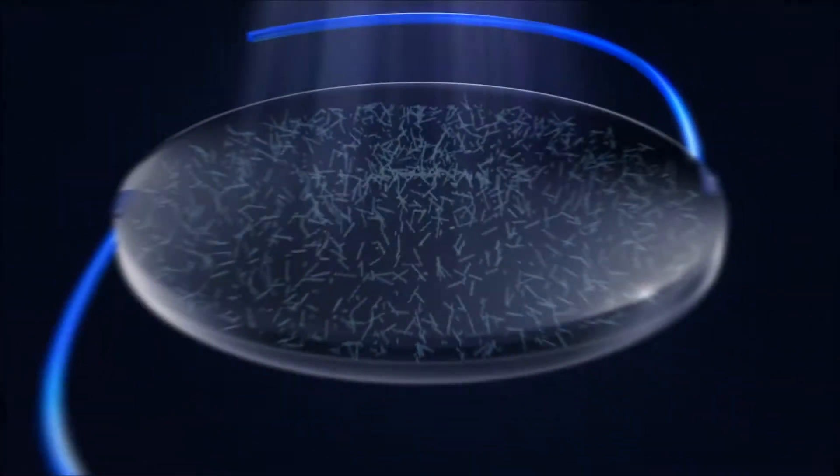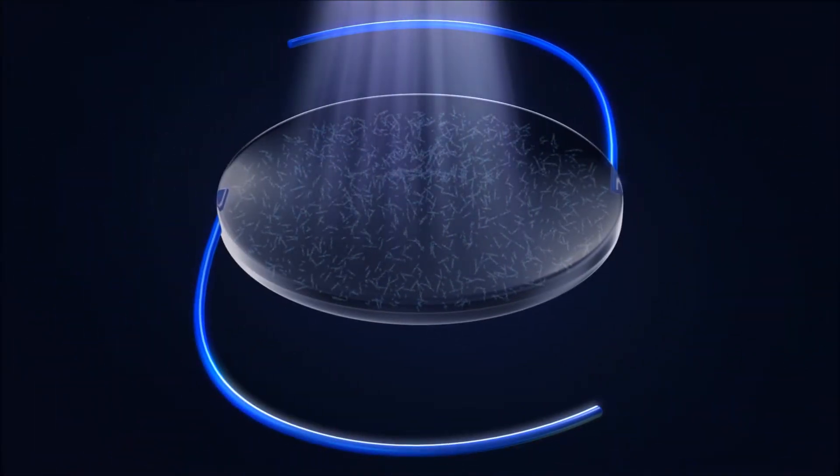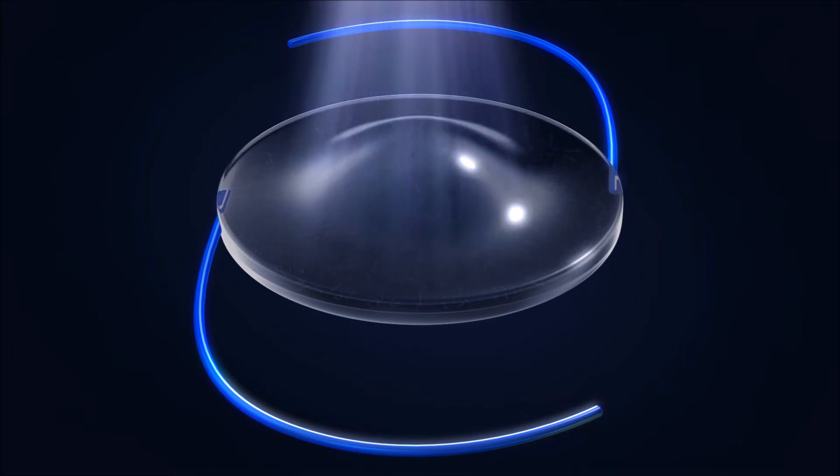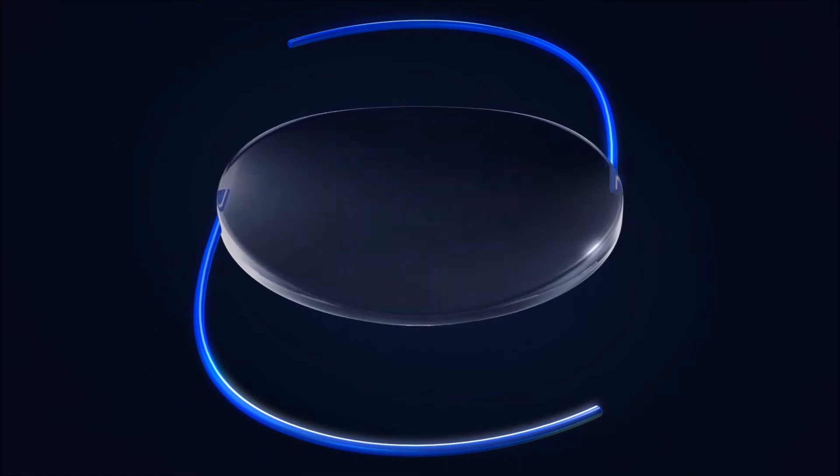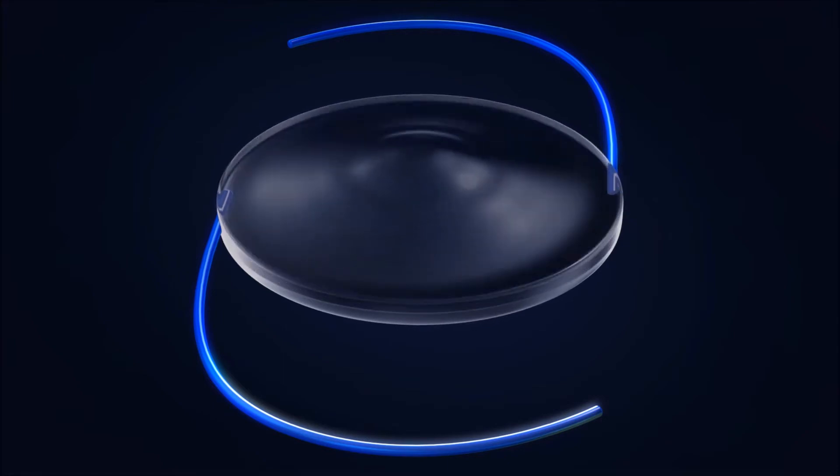The remaining unreacted macromers physically diffuse into the exposed area, causing a highly predictable change in the shape of the lens and a refractive power change of the RxLAL. The light treatment can simultaneously perform spherical and cylindrical adjustments to the lens.